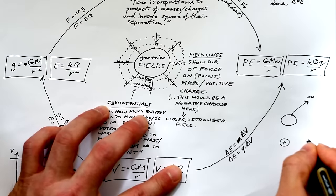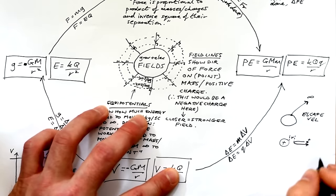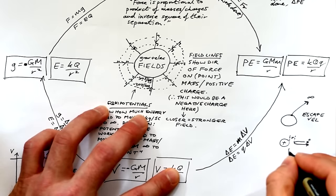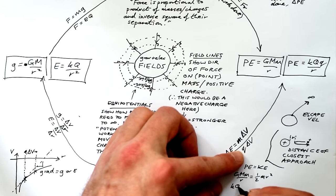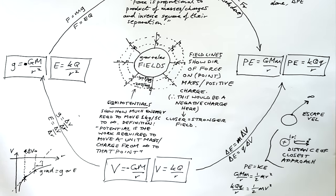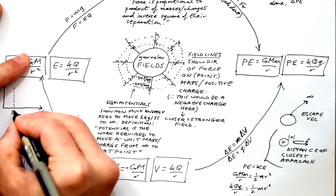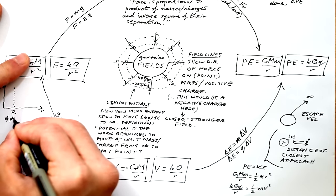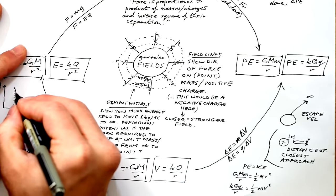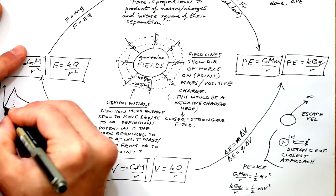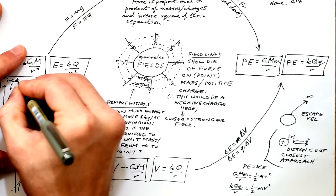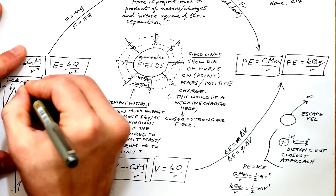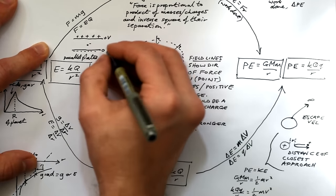Escape velocity is for gravitational fields and distance of closest approach is for two like charges — in both cases, set potential energy equal to kinetic energy: GMm over r equals half mv squared (one m cancels), and kqq over r equals half mv squared. Gravitational field strength decreases with 1/r² but inside a planet it changes linearly because g is proportional to r, going down to zero at the centre because you're being pulled equally in all directions.